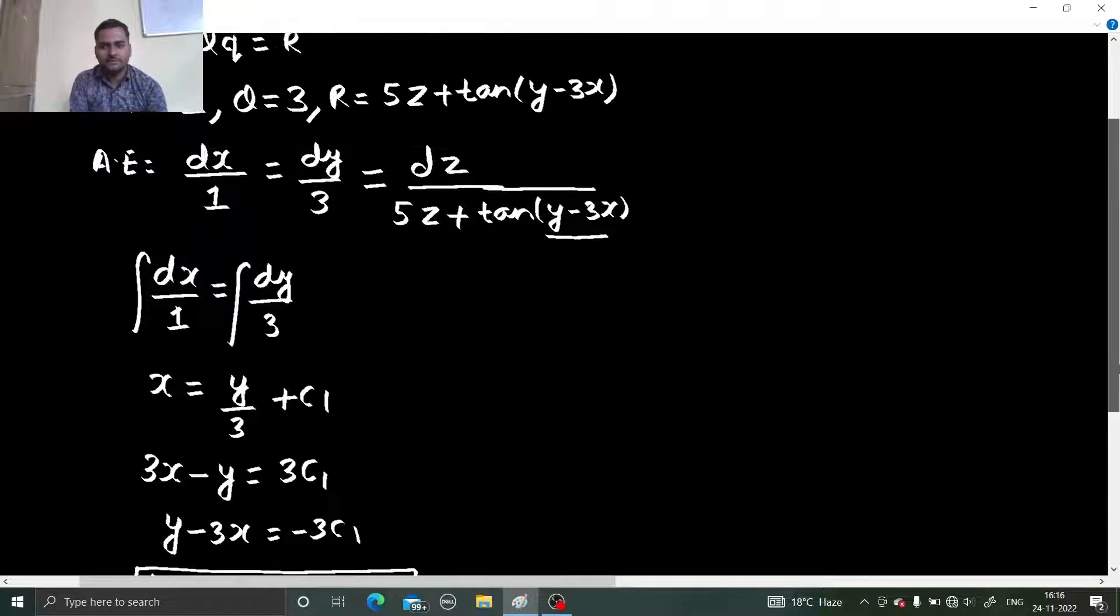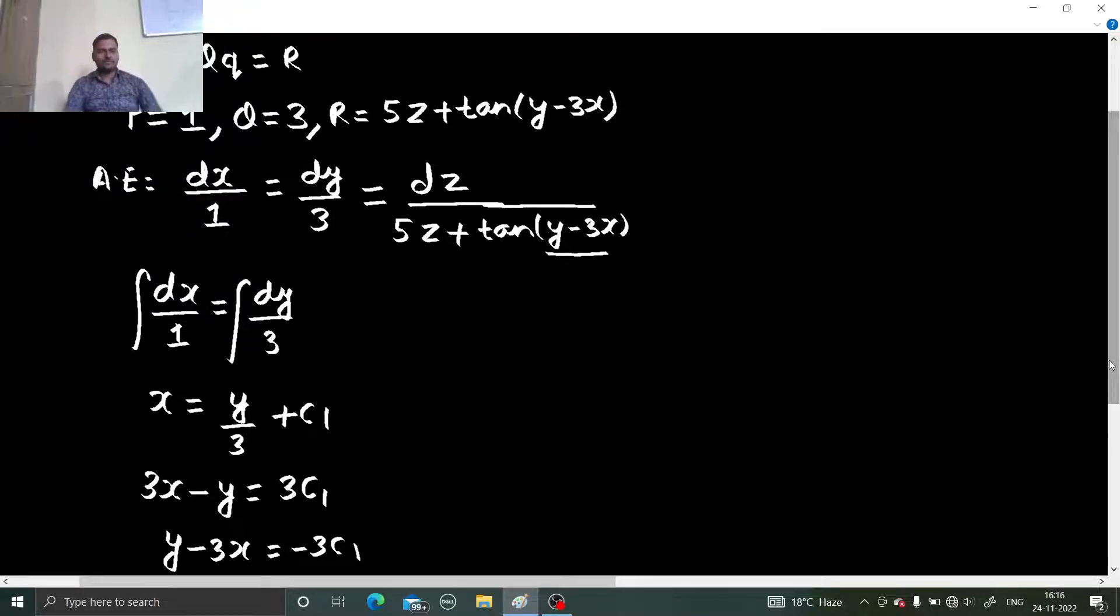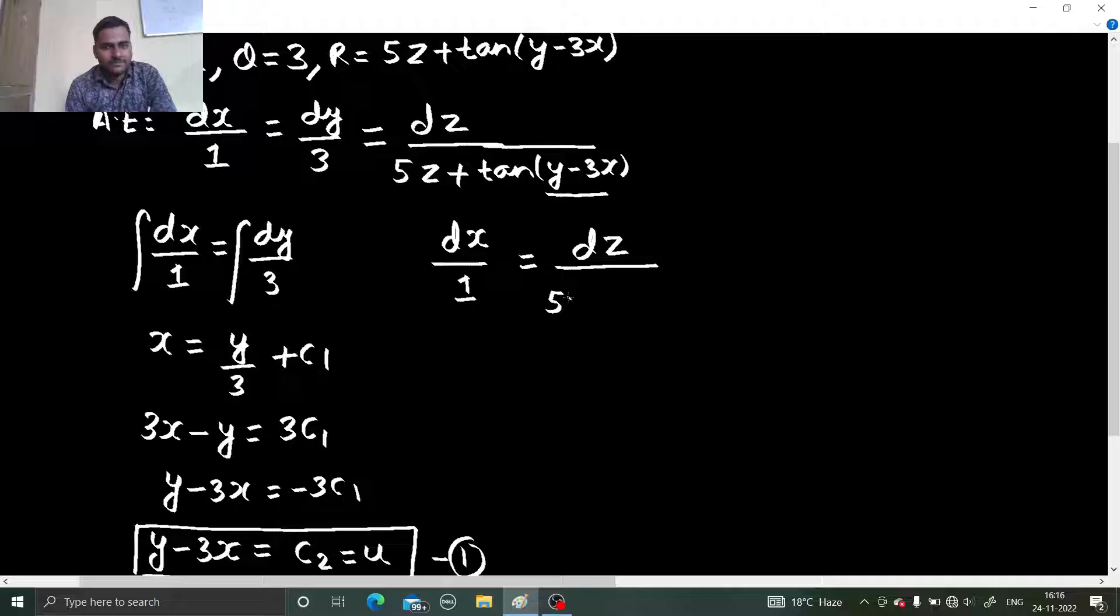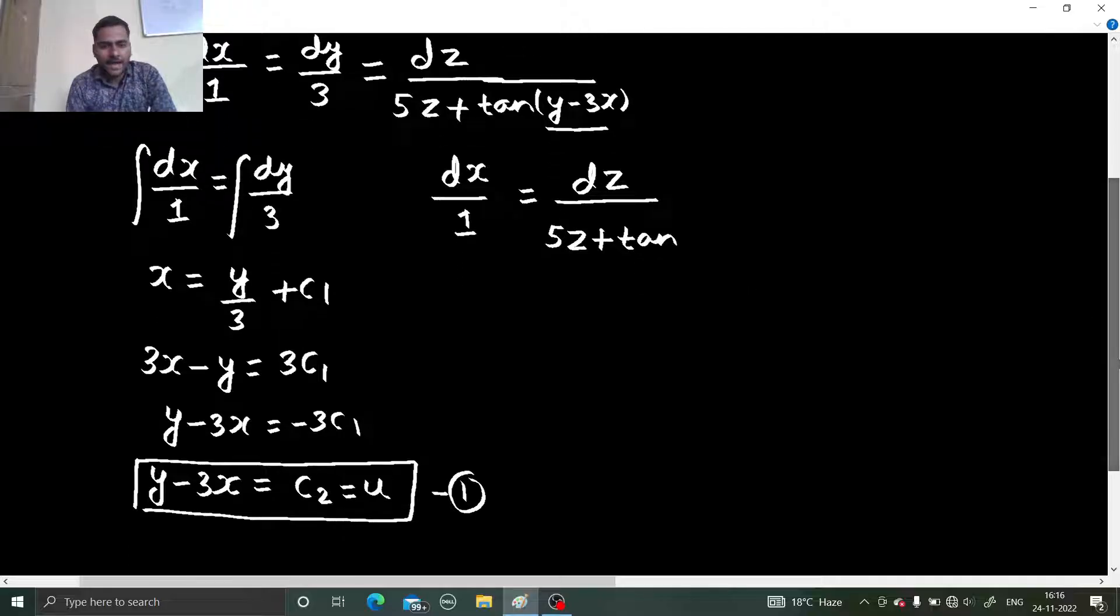For the second one, let us see if method of grouping is still working or not. Now, first take 1 from the first two. So the simpler one is first one. So I am taking the first one and take the third one because I know that I can simplify this because this is 5z plus tan of y minus 3x is c2. c2 is a constant. So you can now integrate this.